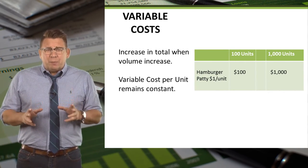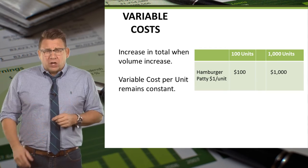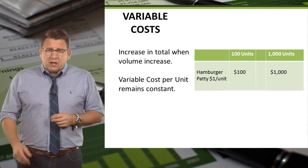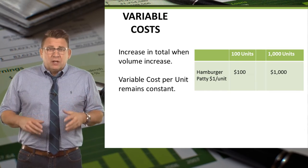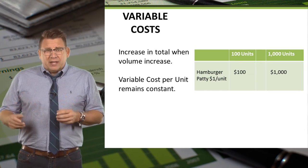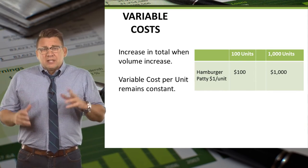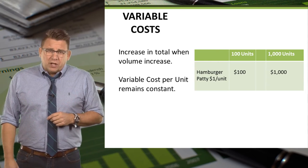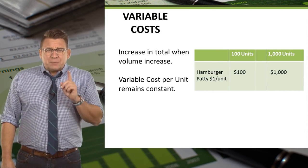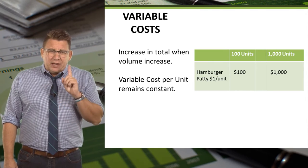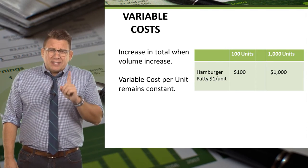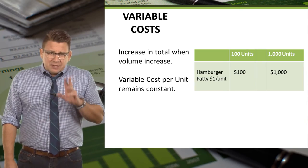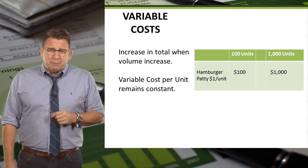Let's say the cost per patty is $1. Sell one hamburger, hamburger patty cost is $1. Sell 10 hamburgers, hamburger patty cost is now $10. Sell 100 hamburgers, the cost is now $100. But the cost per patty has remained consistent at $1 per patty. That's the big idea you should take away from this example.